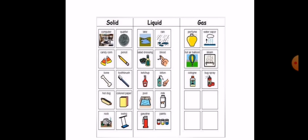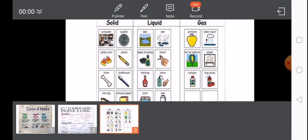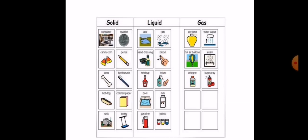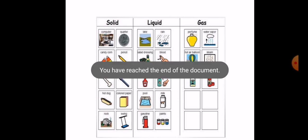Look at this picture. Computer, candy, corn, bone, hot dog — these are all solids. Blood, rain, water in a lake, soda, dressing like ketchup, lotion, pool water, and milk — these are all liquids. Perfume, water vapor, the air in a hot air balloon, steam, and gas spray — these are all gases.